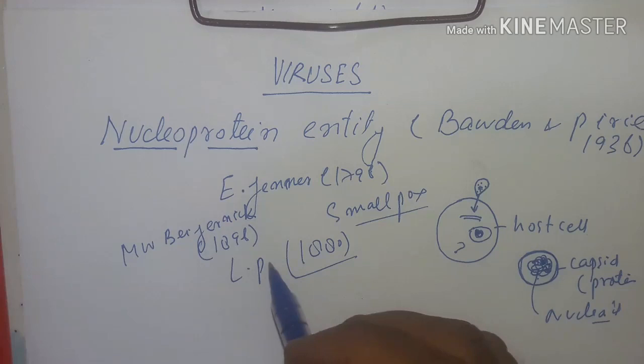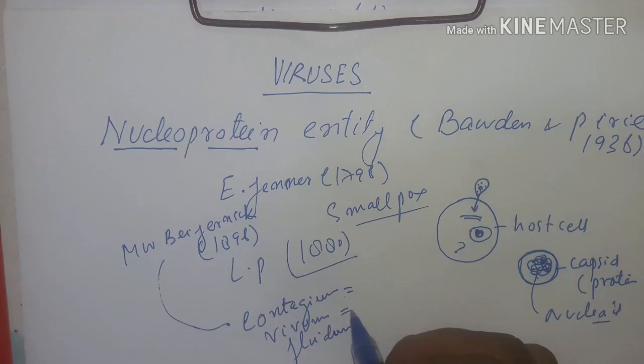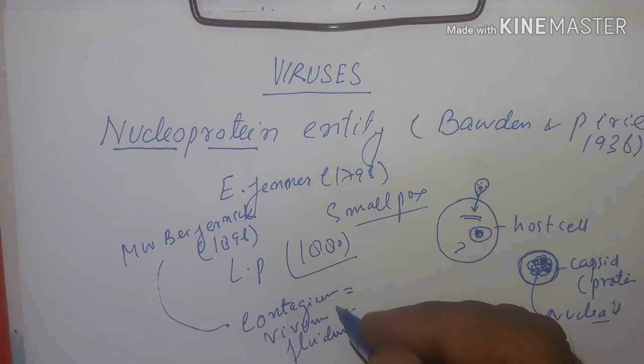M.W. Beijerinck in 1898 described viruses as a living infectious fluid — contagium vivum fluidum — meaning it is a contagious living infectious fluid which causes many diseases. Meanwhile, the term virus had been coined by Louis Pasteur.